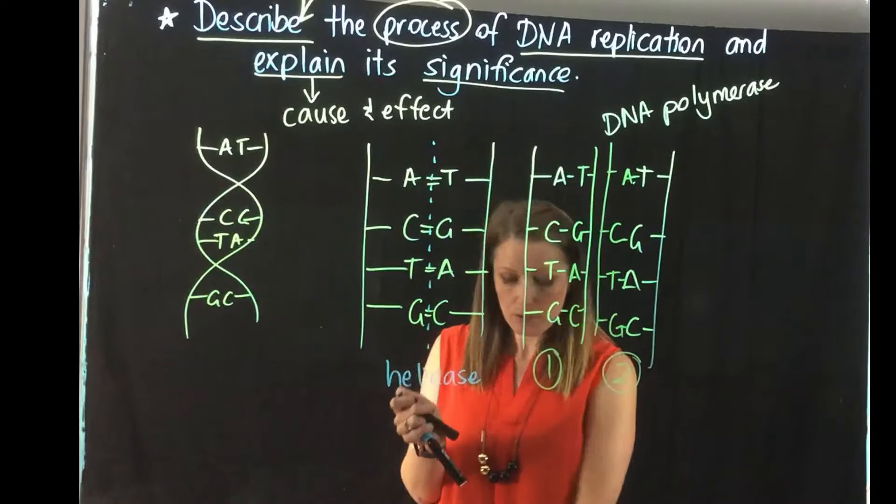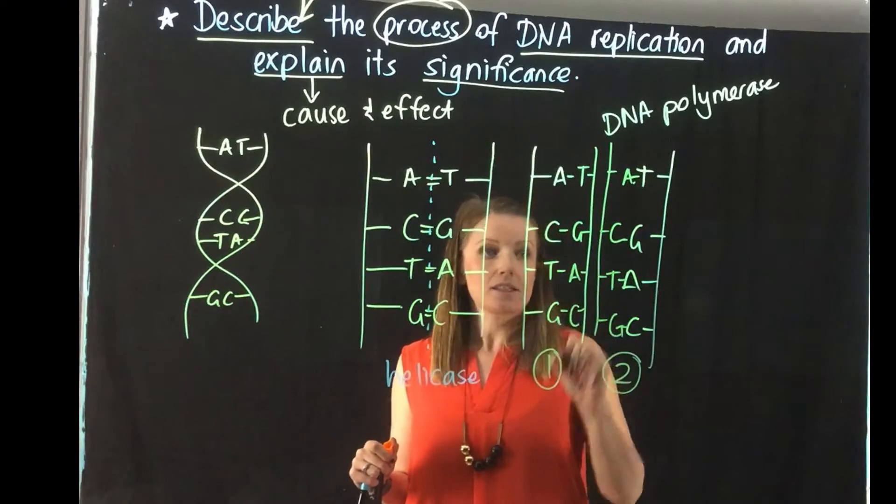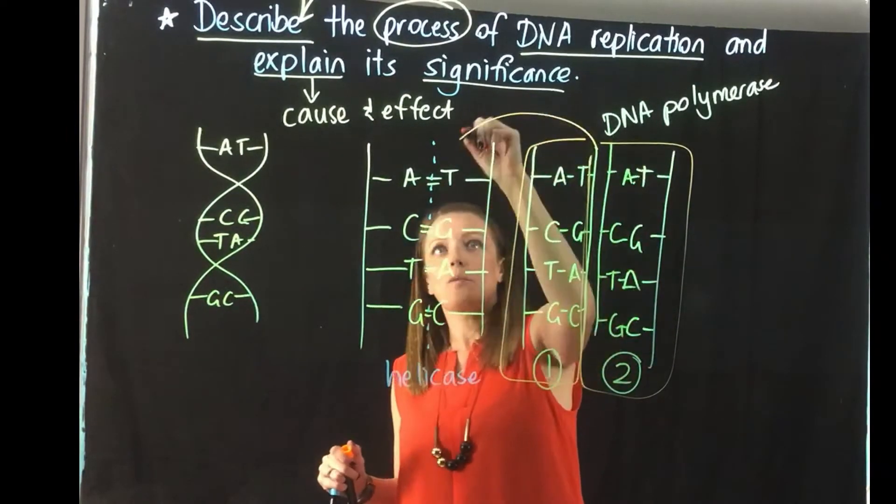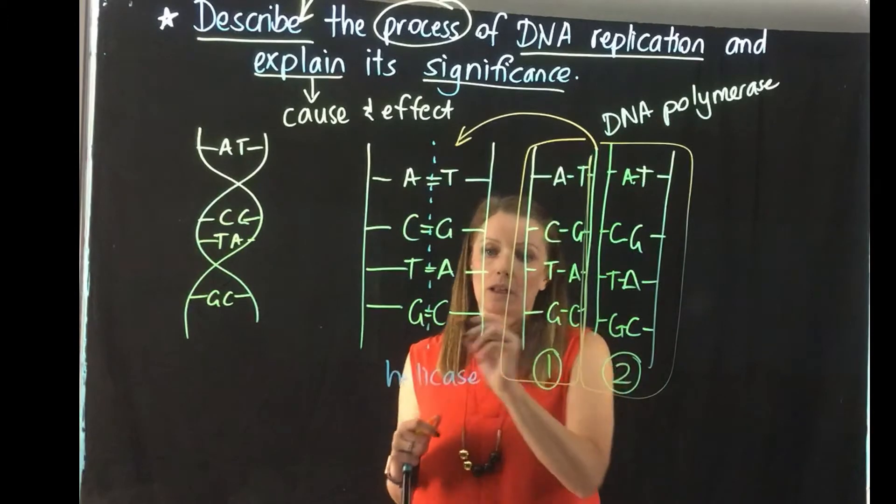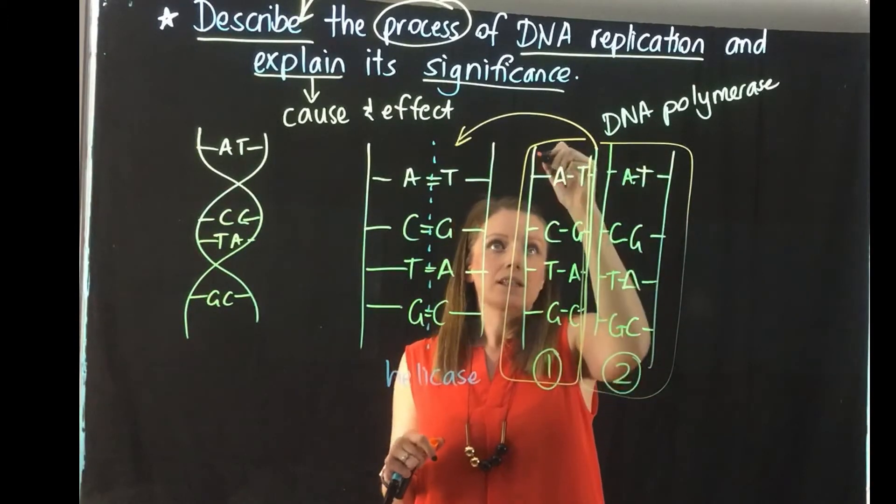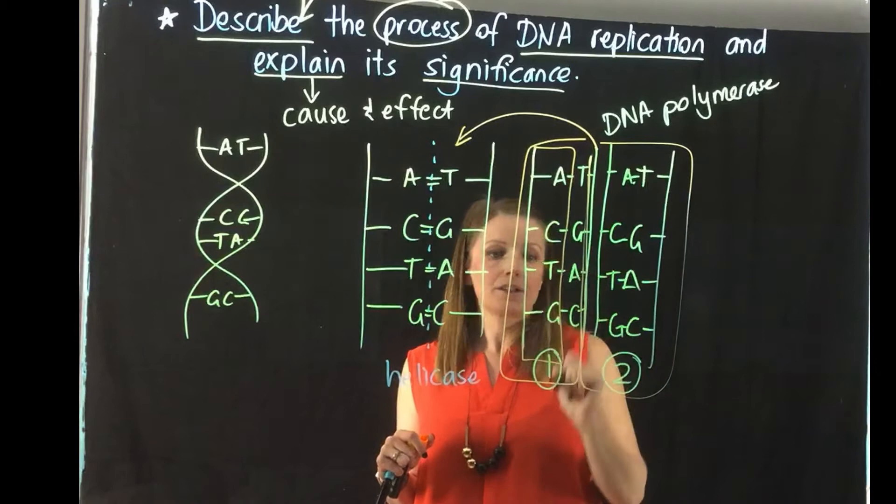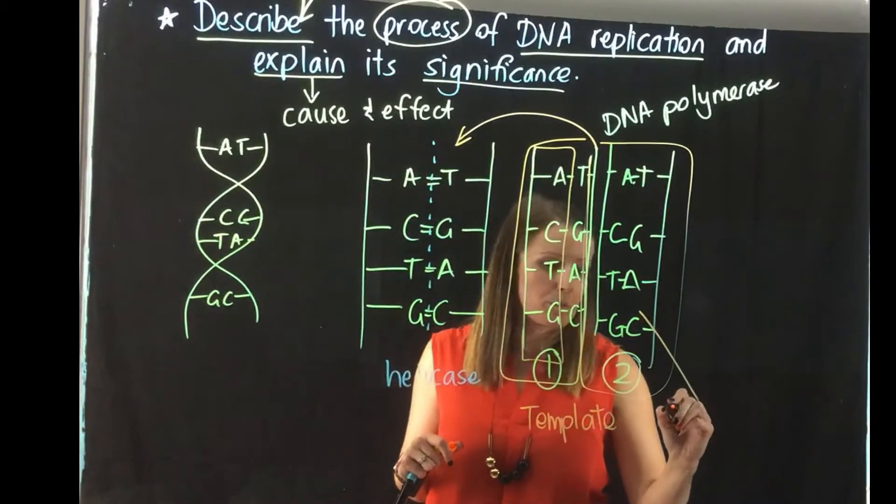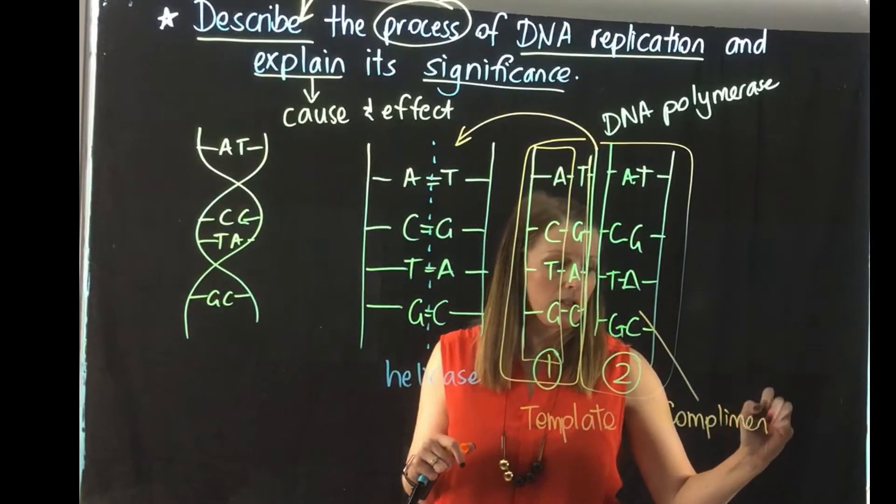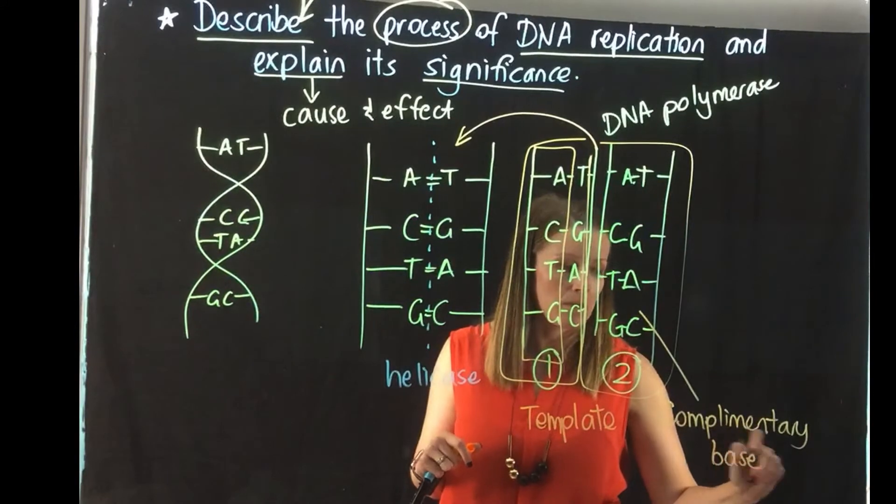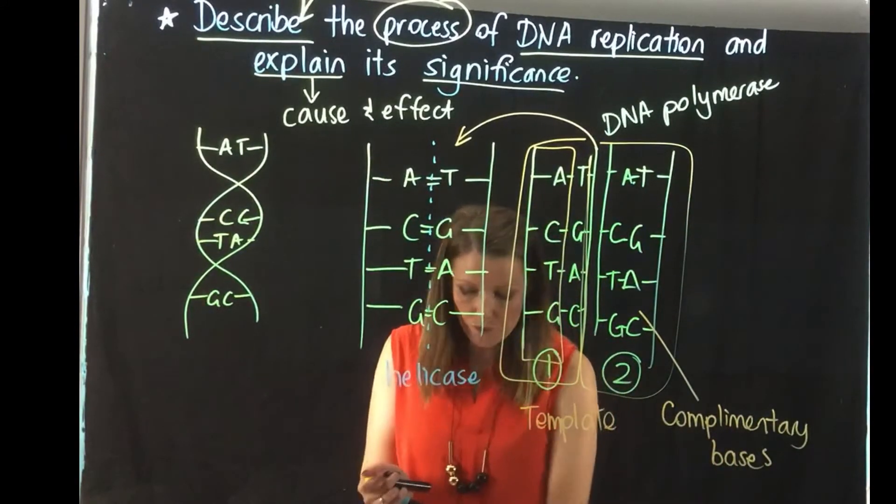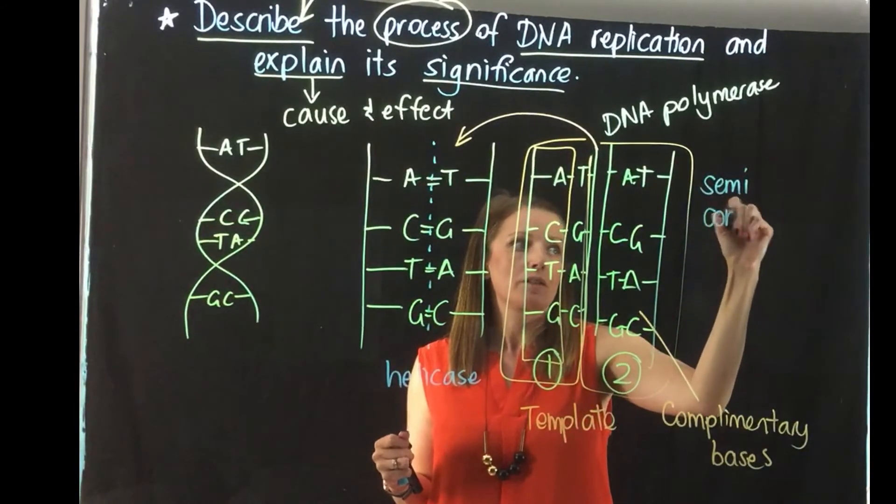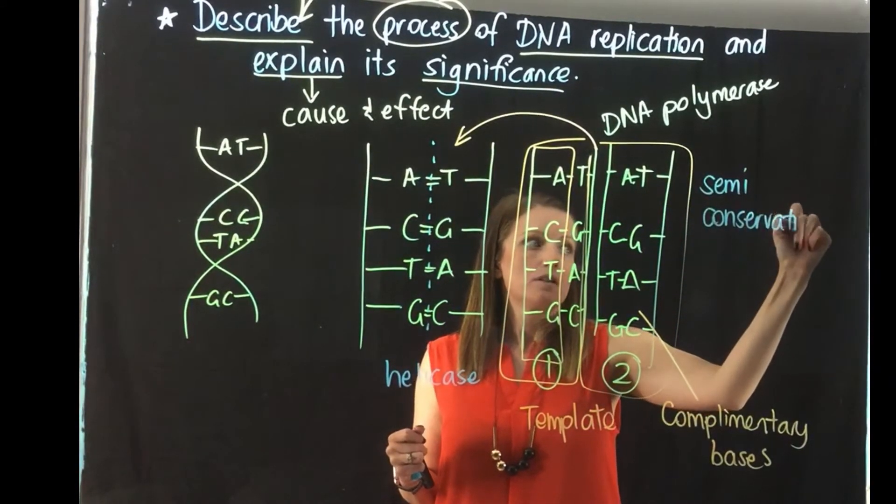And as we can see, this strand one is exactly the same as strand two, and both of them are exactly the same as the strand that we started off with. So what happens is one half of the DNA becomes a template and the other half is built with our complementary bases. And because we have half of our DNA that's original, we call this a semi-conservative process because half of the DNA remains the same.